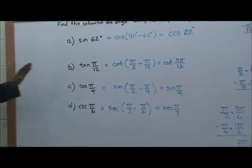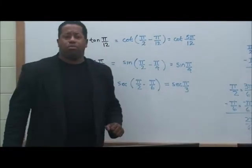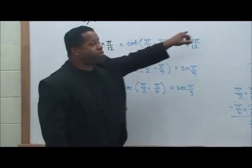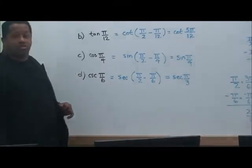If you take and add these two together, of course, 62 plus 28 will give you 90 degrees. You see that, right?